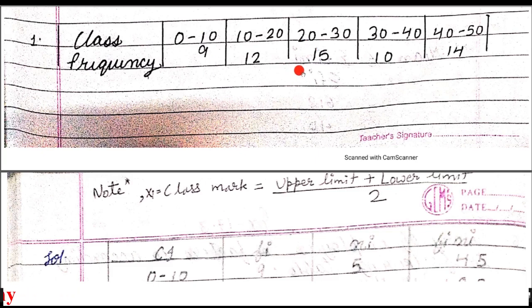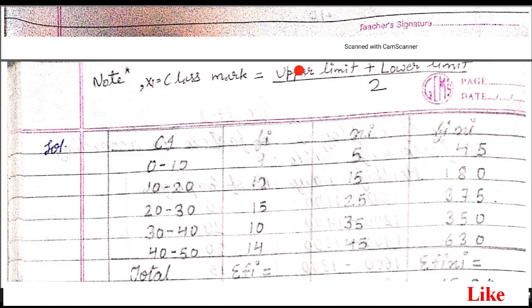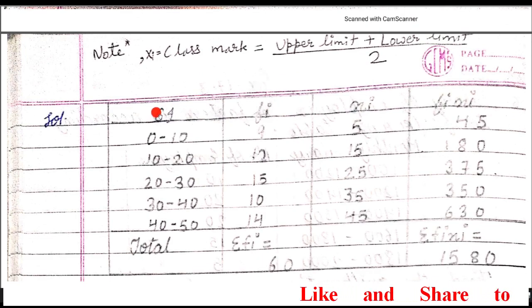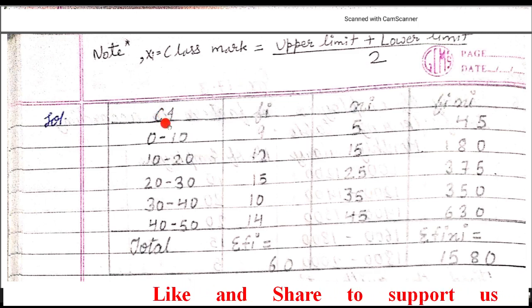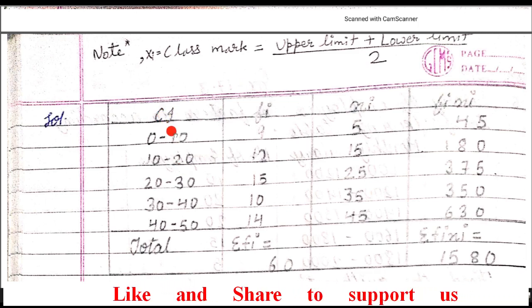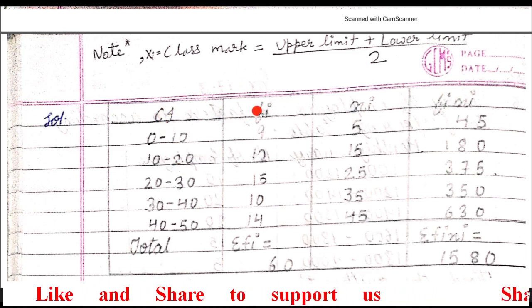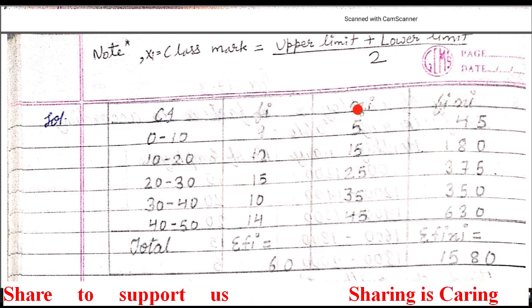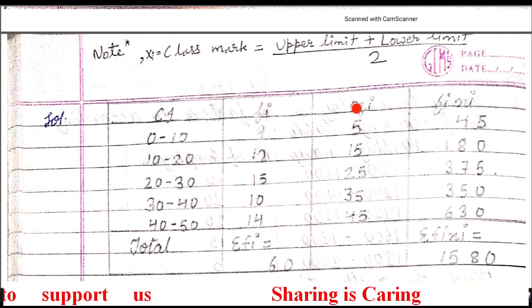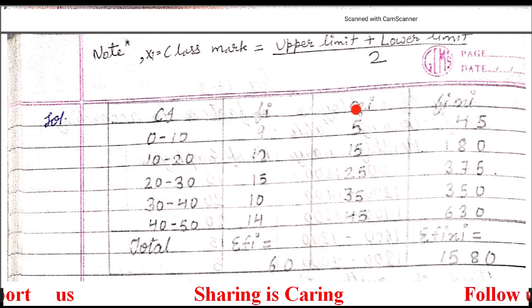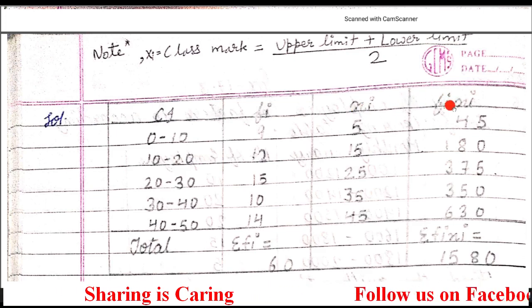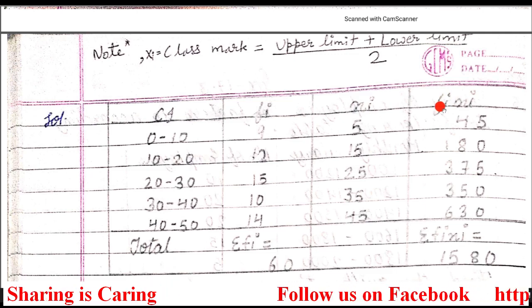The solution for the first question is: the table format for grouped frequency distribution has four columns — the first column is of class interval, the second column is of frequency, the third column is xi which is named as the column of class mark, and the last column is of fi·xi.